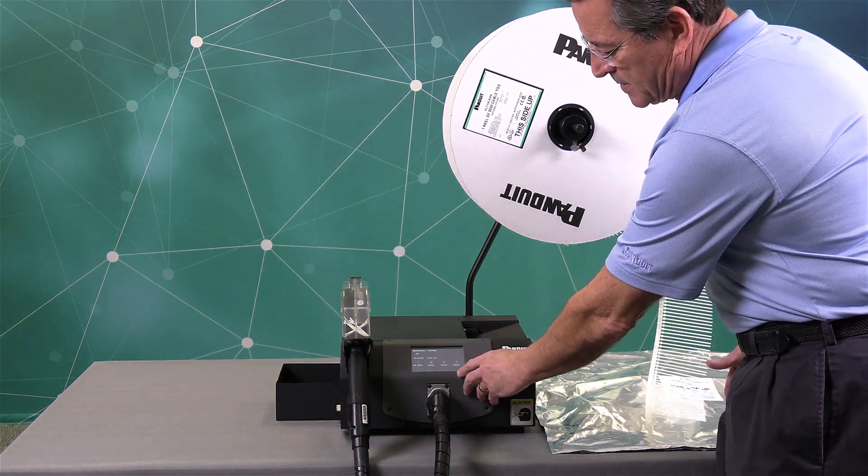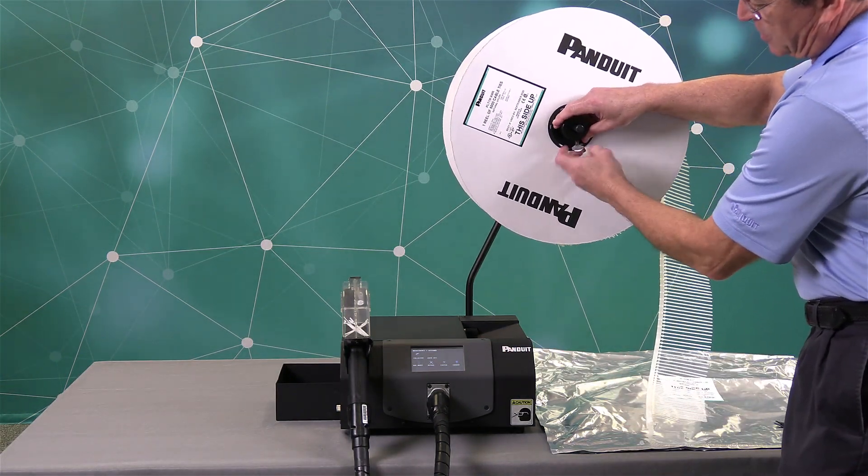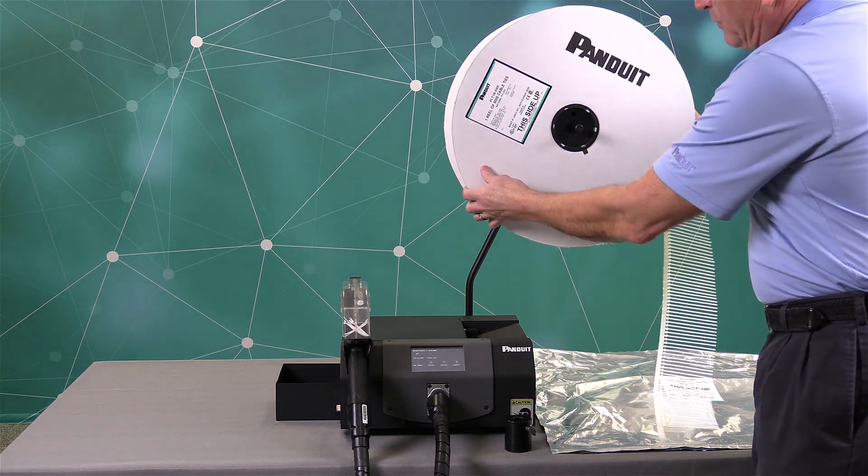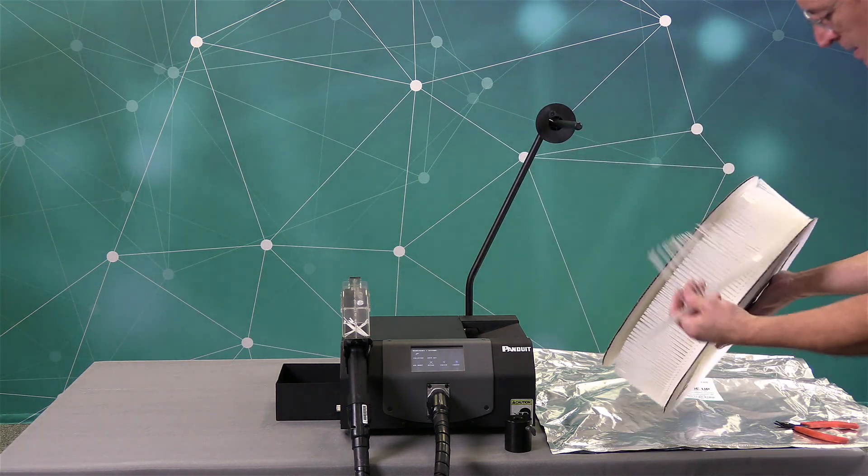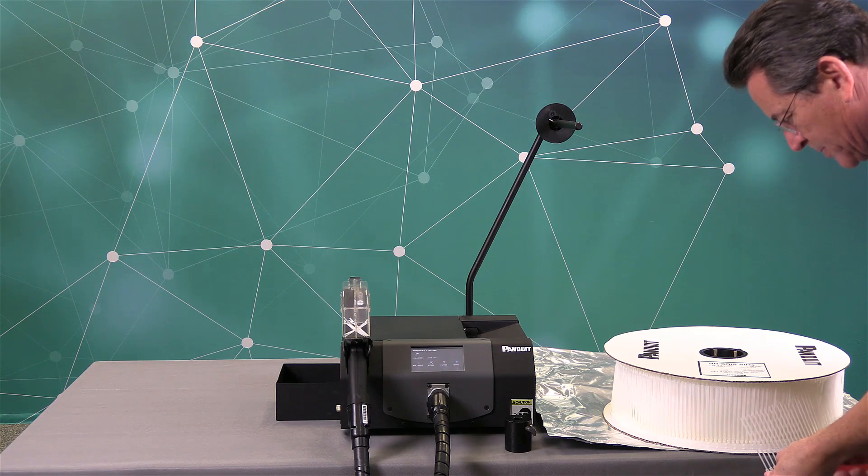Okay. You just want to make sure all the ties are out of the unit. Now, what you want to do is just loosen the wing nut on the reel holder. Take that off. Remove your reel of cable ties.